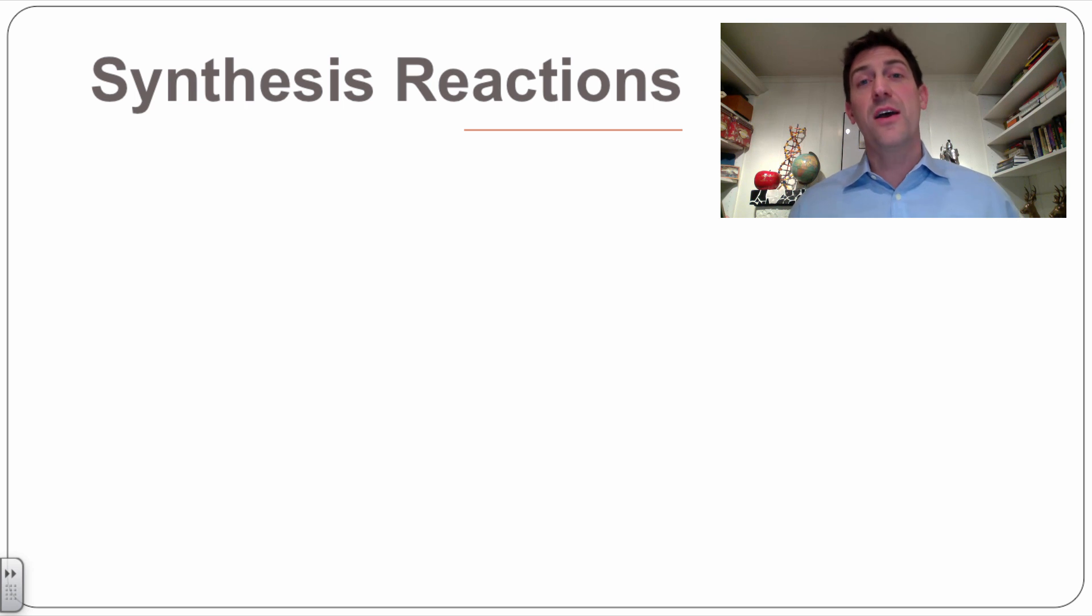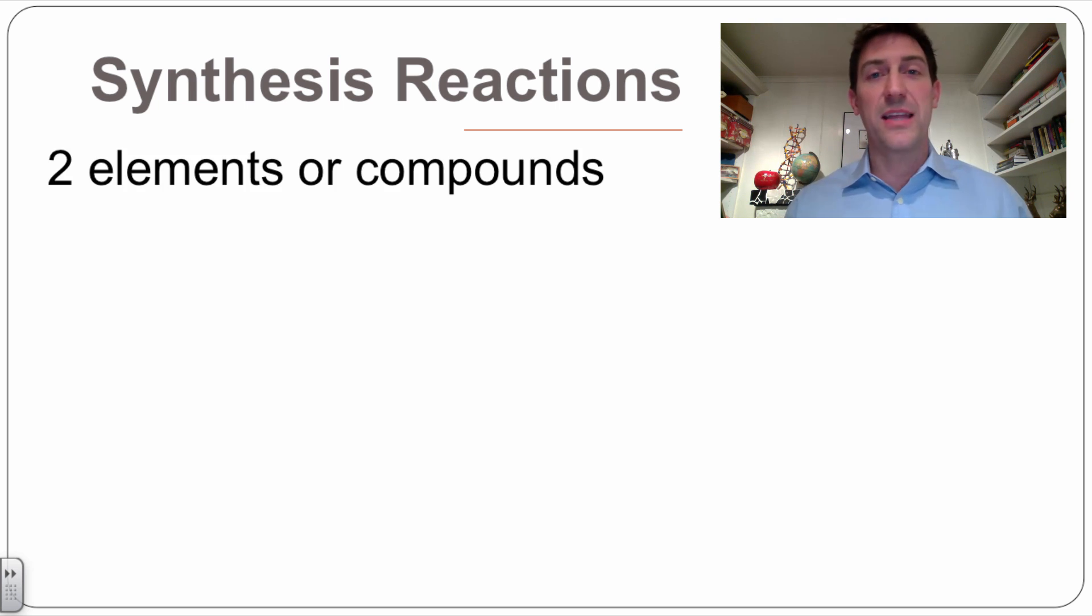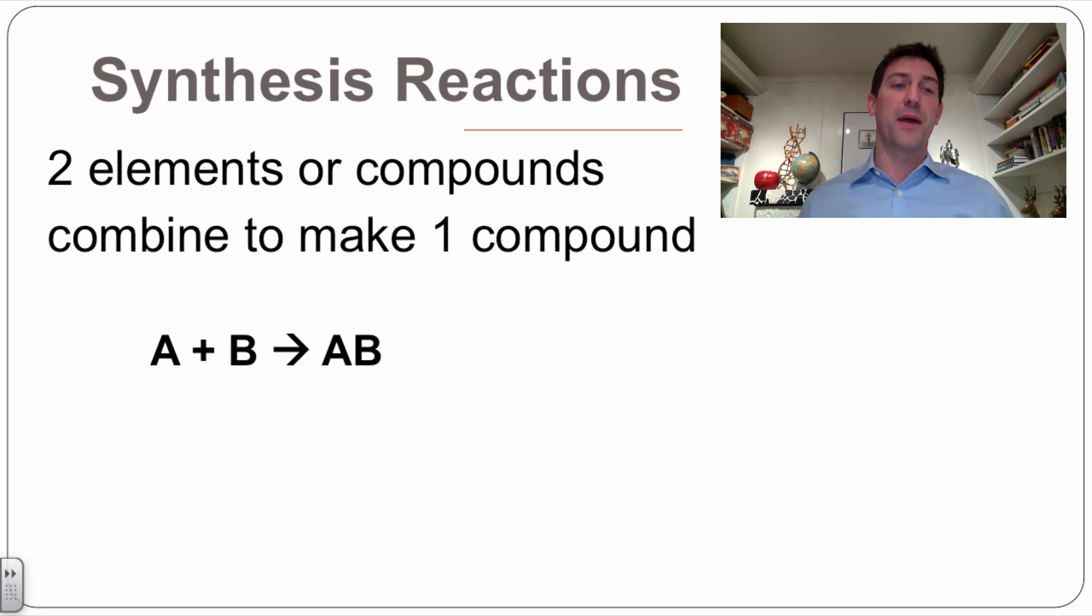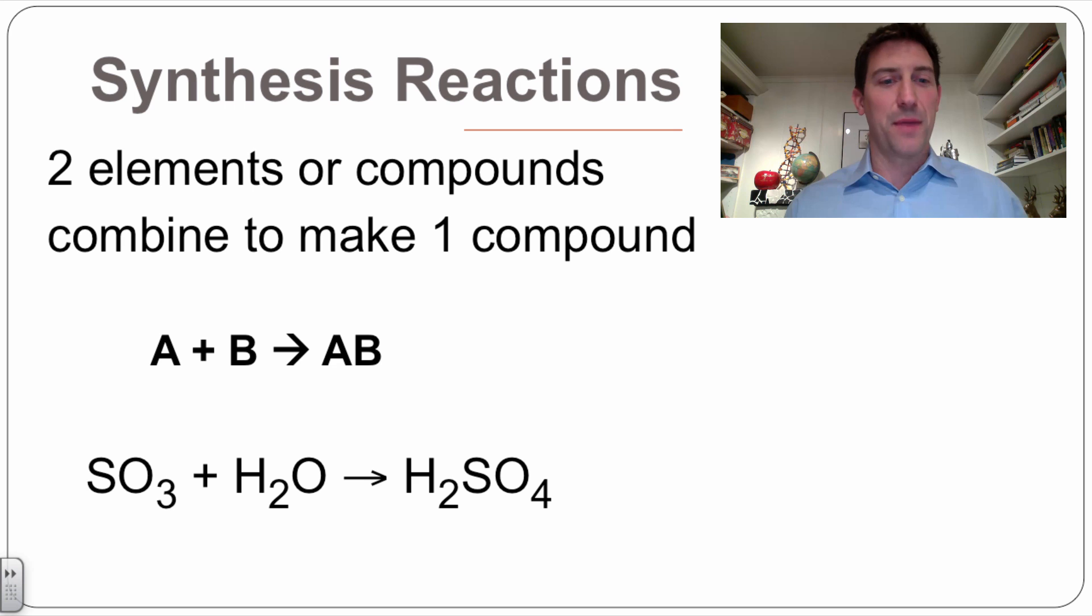Now we're going to start off with synthesis reactions. That's where you have two elements or compounds, and they combine together to make one compound. So if we have generic element A plus generic element B, they combine together to make a compound AB.